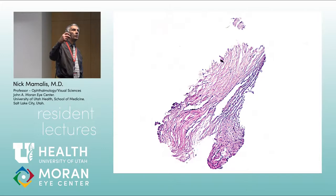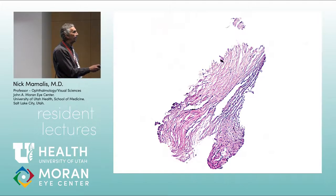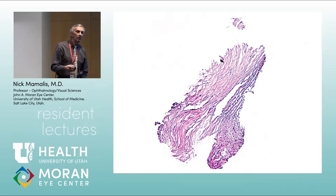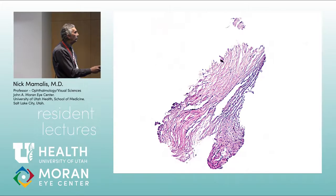When you are looking at the angle through a goniolens, you put it on there and look into the angle. What's the first thing you see as the cornea ends? Schwalbe's line. That's where Descemet's membrane ends — that's Schwalbe's line. So we're looking at the meshwork, divided into non-pigmented and pigmented meshwork. The part closest to the cornea will be lighter colored; the part further posteriorly, closer to the iris, will be darker colored.